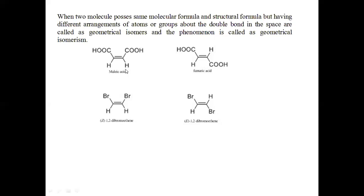Consider maleic acid and fumaric acid. They have the same molecular formula — the same number of carbon, hydrogen, and oxygen atoms. Now consider the arrangement of the COOH group. In maleic acid both COOH groups are present on the same side of the double bond, but in fumaric acid one COOH group is on the upper side and the next COOH group is on the lower side of the carbon-carbon double bond.